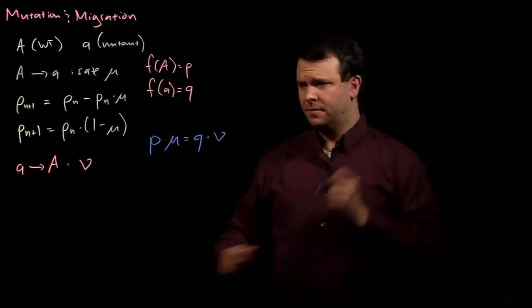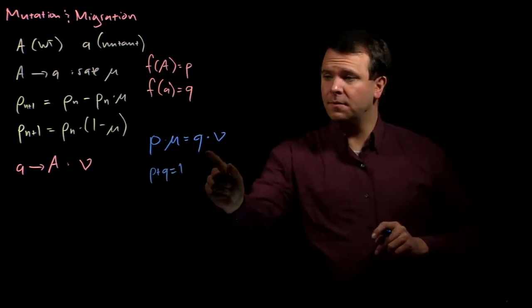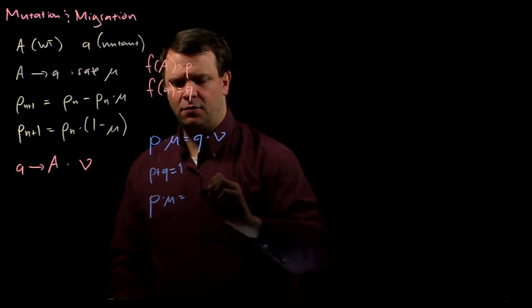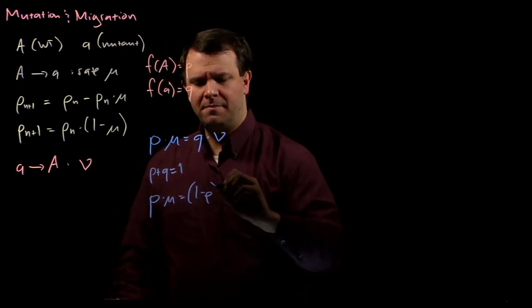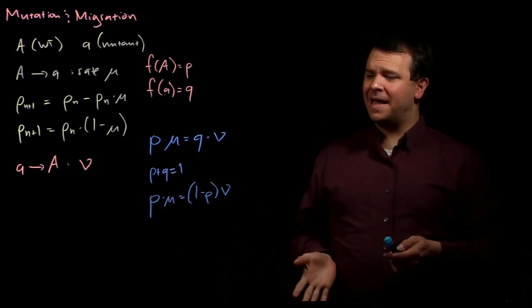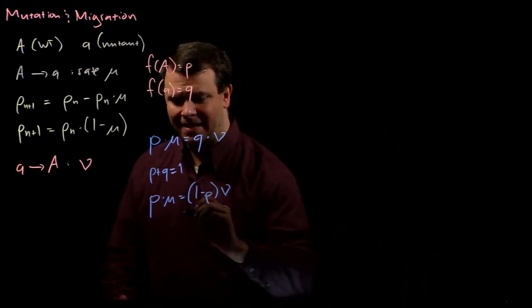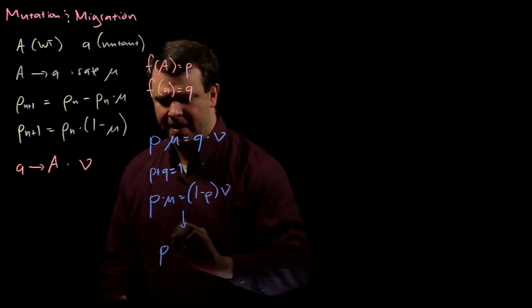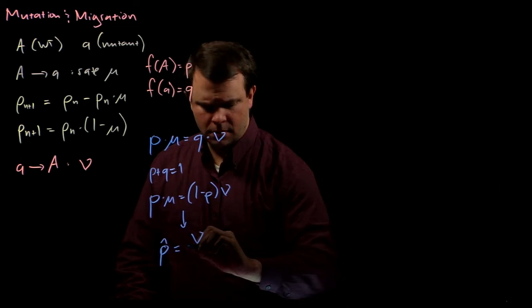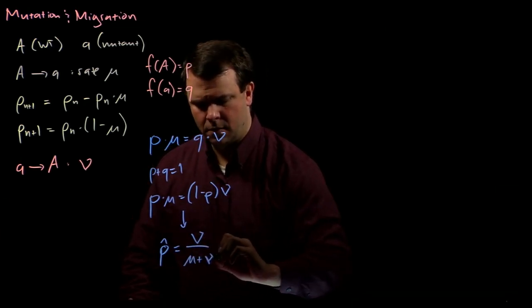And remember, though, that p plus q must equal 1, and so we can actually replace q in this equation by 1 minus p. And then we can just go ahead and solve for p. And when we do that, we find that the equilibrium value of p, which we'll write as p hat, is nu over mu plus nu.